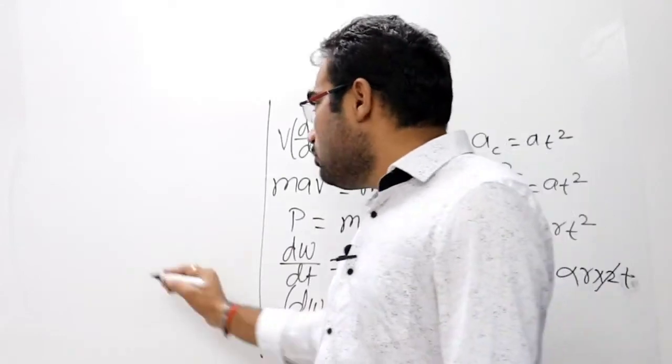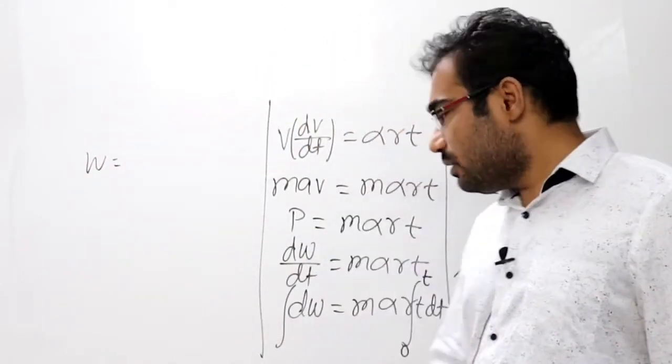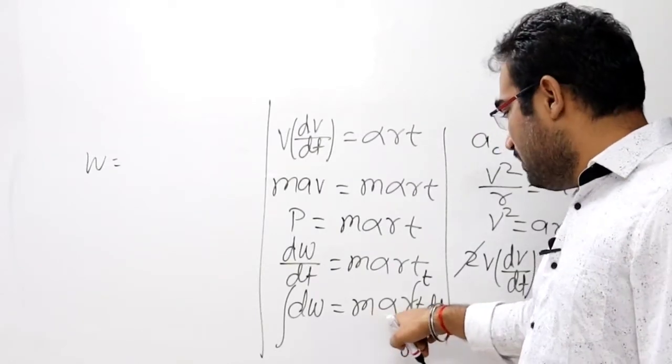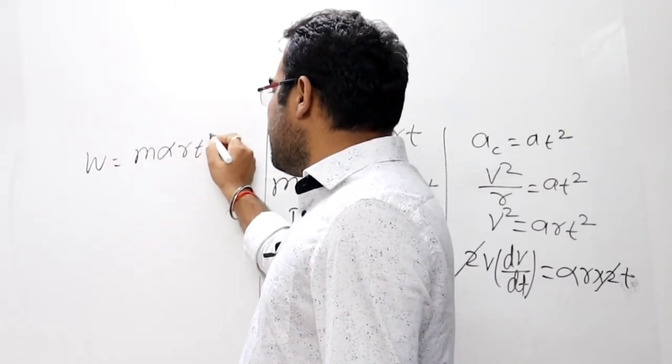Zero to T time pe toh work calculate ho jayega yaha se. Toh work ka kya equation aata hai dekhiye: dW ka integration W ho gaya, and that is equal to M alpha R, and that is equal to T squared by 2. M alpha R T squared by 2.